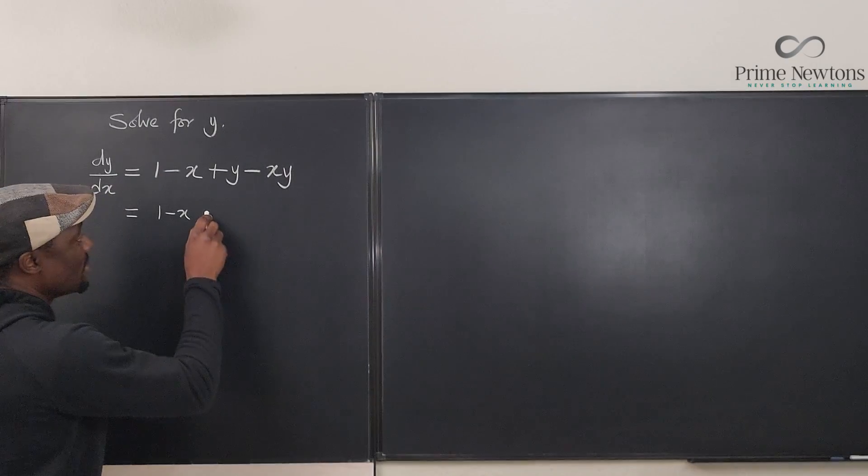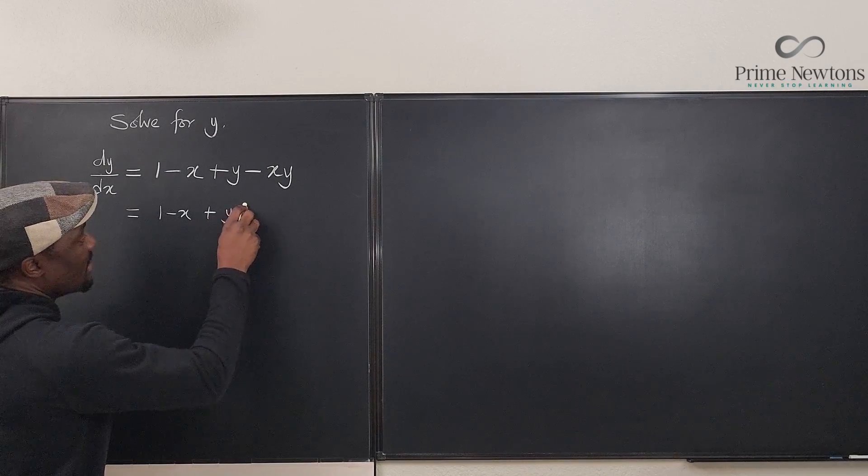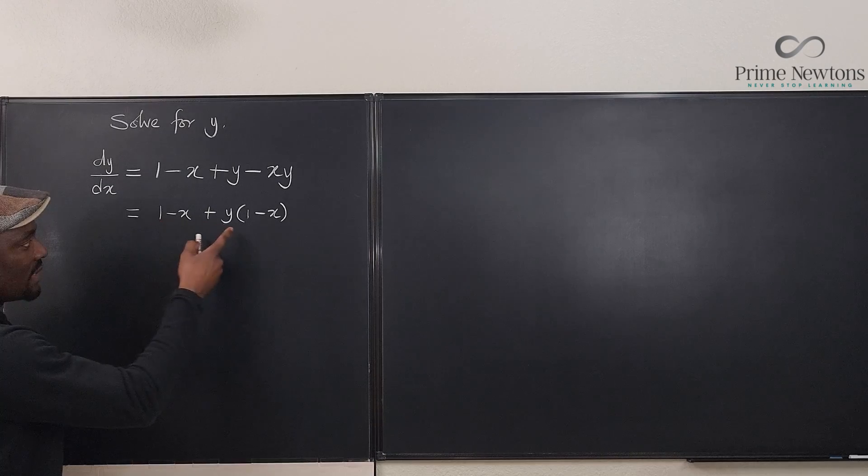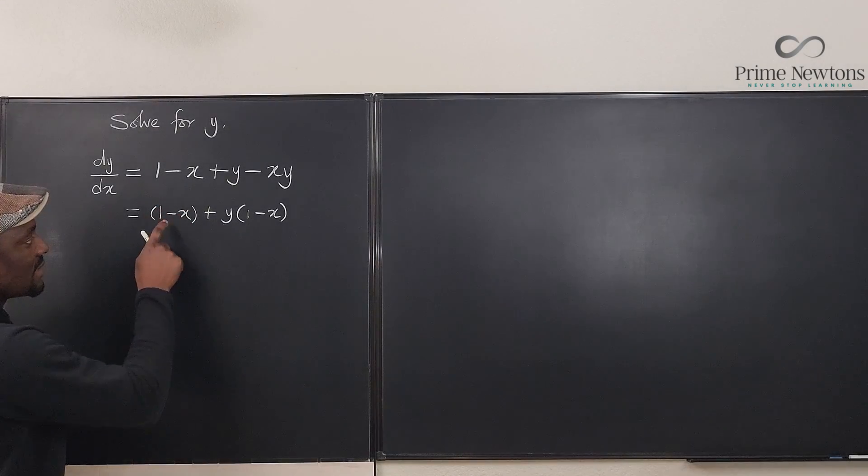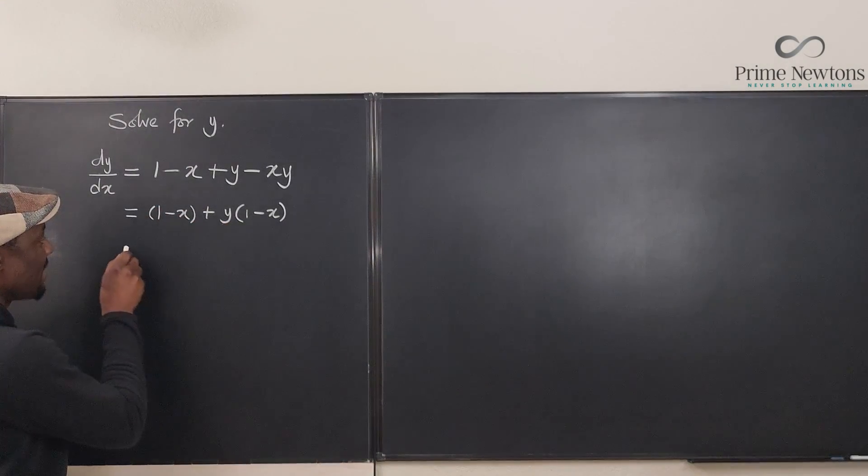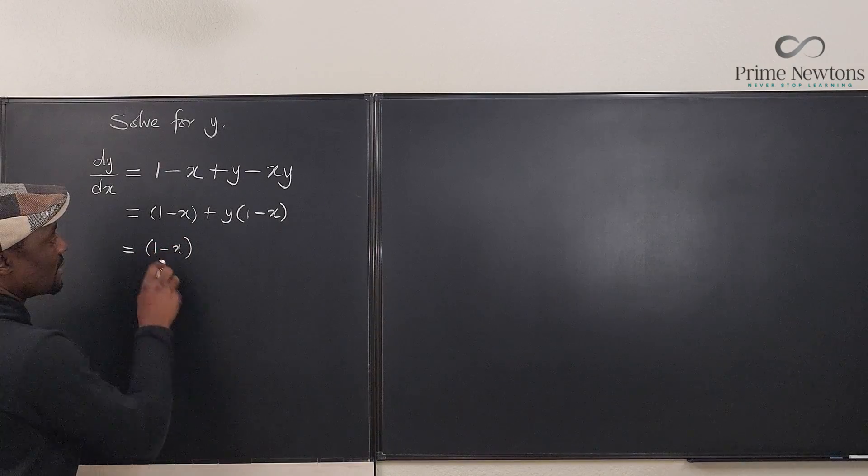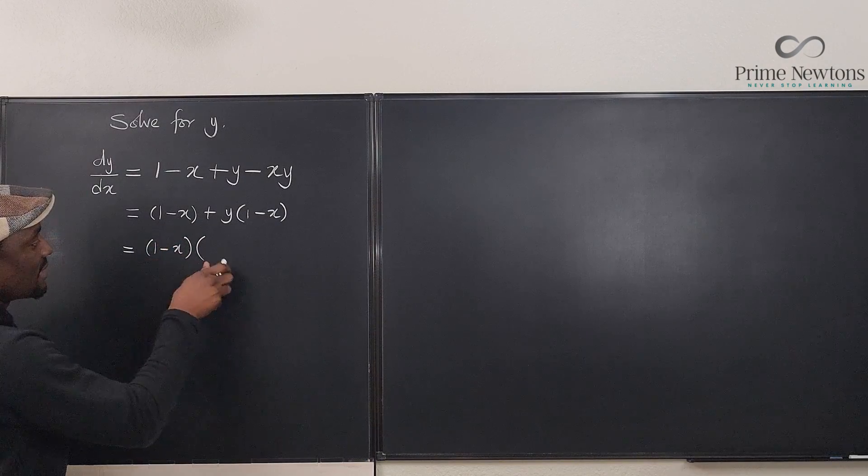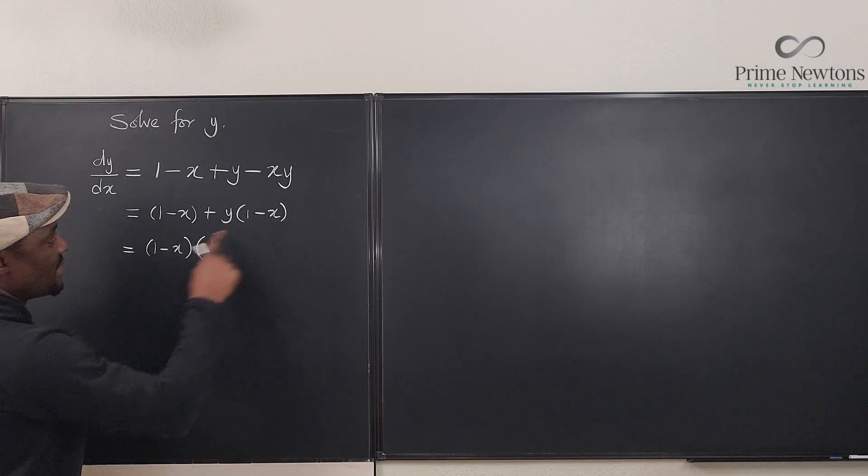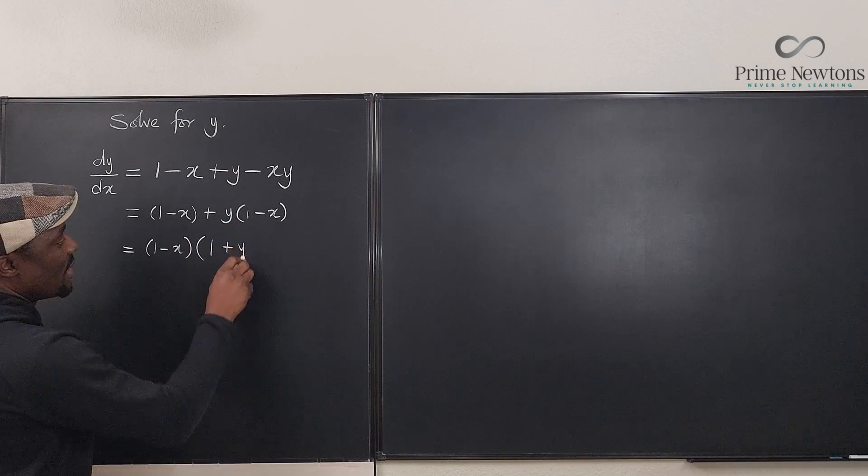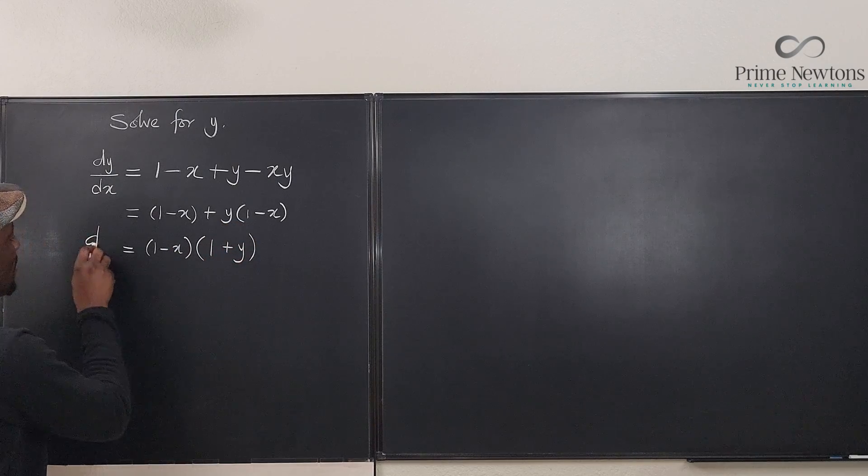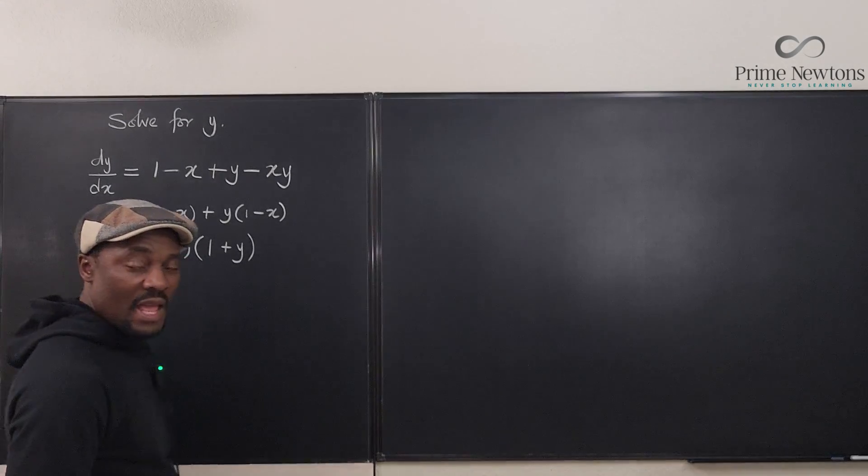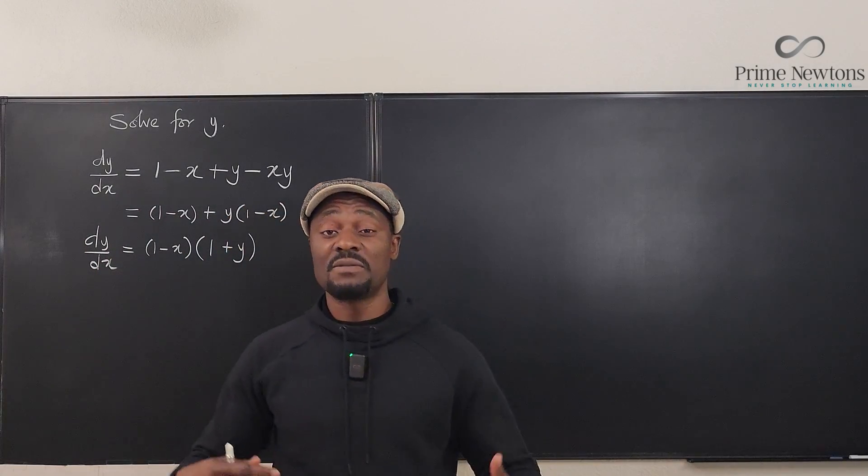I can factor out y from here, which is y times (1 minus x). So clearly I can see 1 minus x in two places. I can factor (1 minus x) out, so that what I have left is: if I divide this by this I'm going to get 1, if I divide this by this I'm going to get plus y. So it looks like my dy/dx is (1 minus x)(1 plus y). This is what you call a separable differential equation.